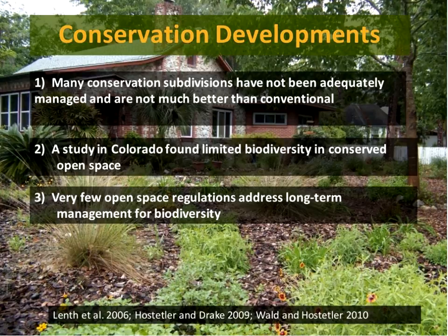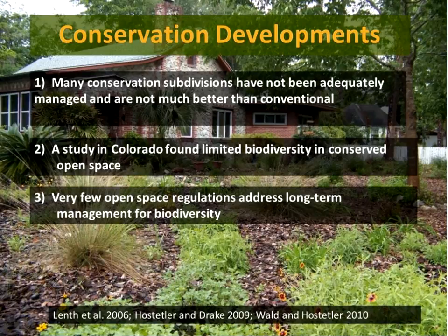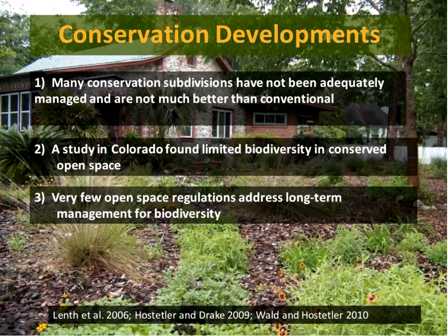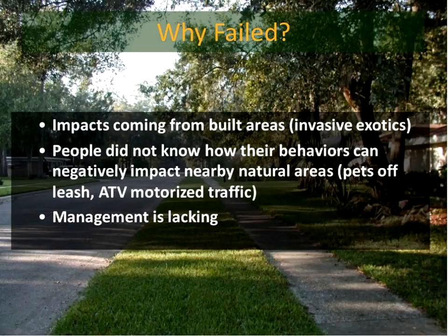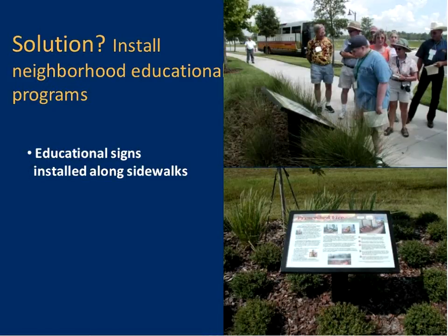A lot of conservation developments studied anecdotally have failed over the years, mainly because even though there's good green infrastructure — like natural open space or a good wetland — it tends to erode over time due to activities by nearby homeowners: feral cat colonies, invasive exotics, ATV vehicles, and fertilizer runoff from lawns going into wetlands. The real problem is that management is lacking — there's no management for the conserved natural areas and no management addressing environmental or biodiversity concerns within the neighborhoods themselves.